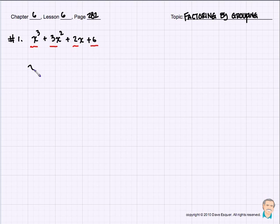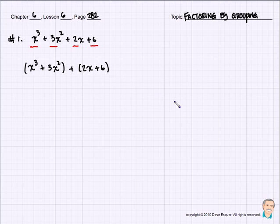The way these problems are set up is we actually literally group them together in groups of two. And sometimes we can see fun things that fall out. So we have the first group, which is x cubed plus 3x squared, and we have the second group, which is 2x plus 6.